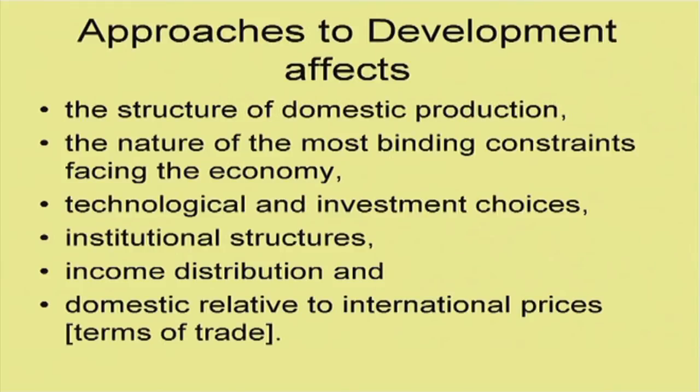Fifthly, approaches to development also affect income distribution. Not everybody thinks that economies simply follow what Simon Kuznets said — based on 100 years of US data — that income disparity widens as the economy progresses initially, but beyond a certain threshold, inequality between people starts declining. Environmental economists have now started establishing whether the same inverted U-shape curve holds for the relationship between economic development and the environment. Whether a development approach increases or reduces disparity between the rich and poor is something we also need to keep in mind.